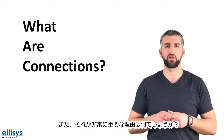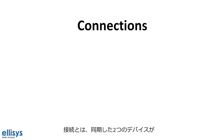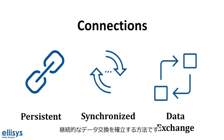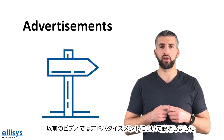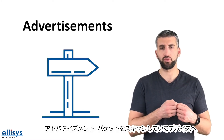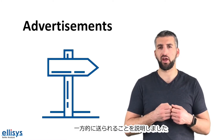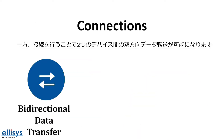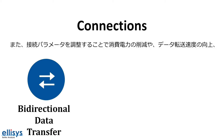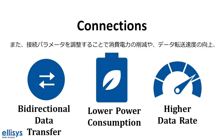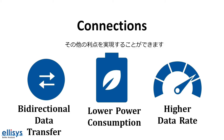So what are connections in BLE, and what makes them so important? Connections are a way to establish persistent data communication that is synchronized and allows data to be exchanged between two devices. Advertisements are a one-way street in terms of data transfer, from the broadcaster or peripheral to devices scanning for advertisement packets. Connections, on the other hand, enable bidirectional data transfer between two devices. They also have other advantages, such as lower power consumption through adjustment of connection parameters, as well as higher data transfer speeds.